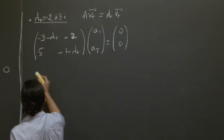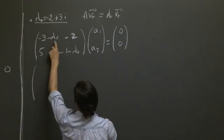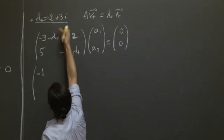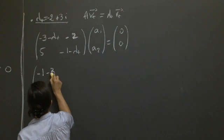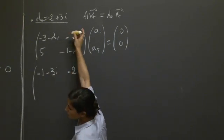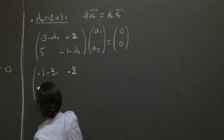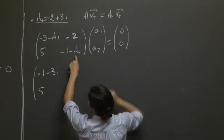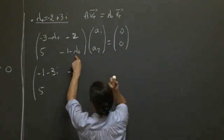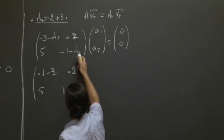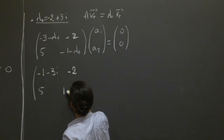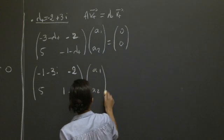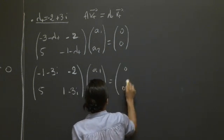So if we plug in now for the value of lambda plus that we have, we have minus 3 plus 2, which gives us minus 1, and then we have minus 3i, and minus 2. And for the second line, second entry of this matrix, you have 5, minus 1 minus minus 2. So we have 2 minus 1, which is 1, and then we have minus 3i.